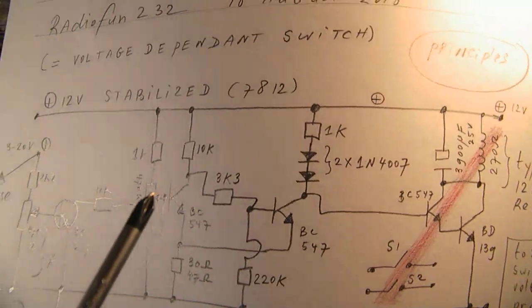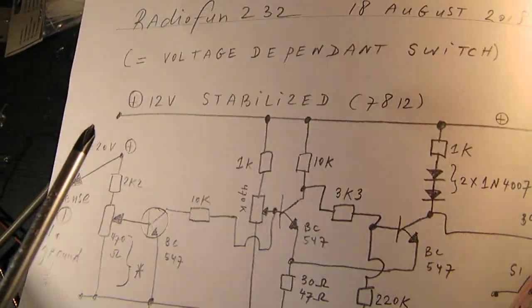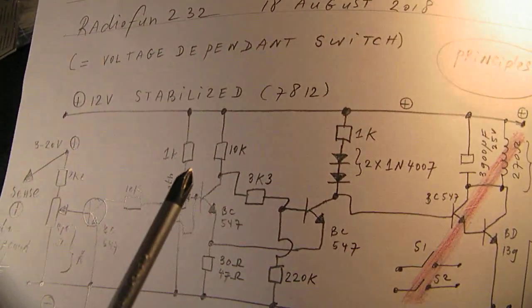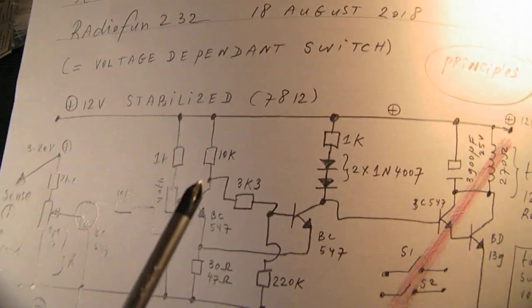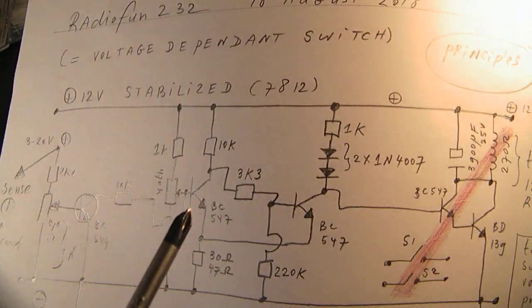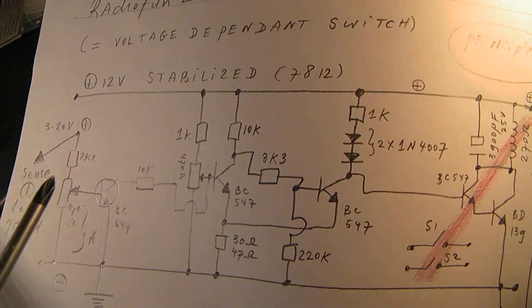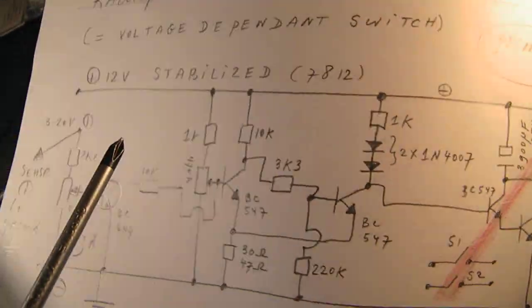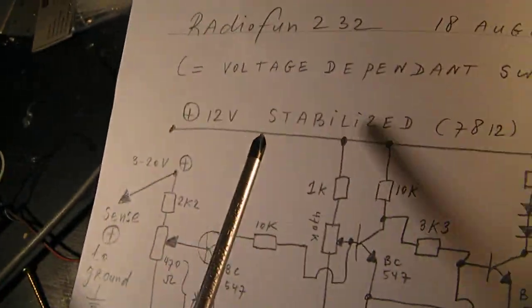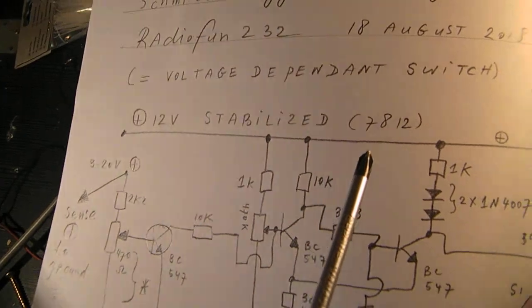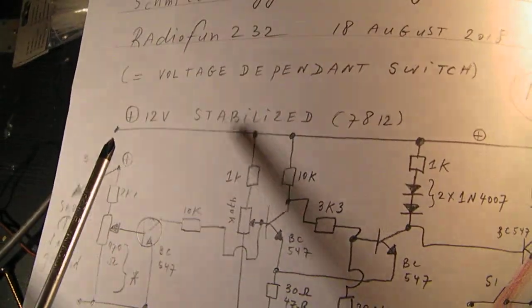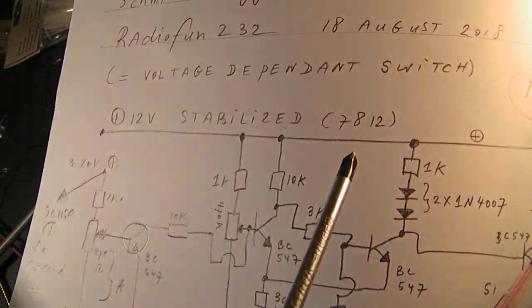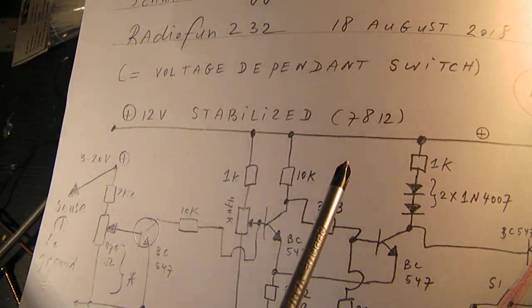It's very important with these switches that the voltage that the switch gets is stabilized. Of course with a non-stabilized voltage, the Schmitt trigger will go anyway depending on the load, etc. So here we have a stabilized voltage, and in my circuit that I'm going to publish, it was done with a 7812 12 volt stabilizer chip.